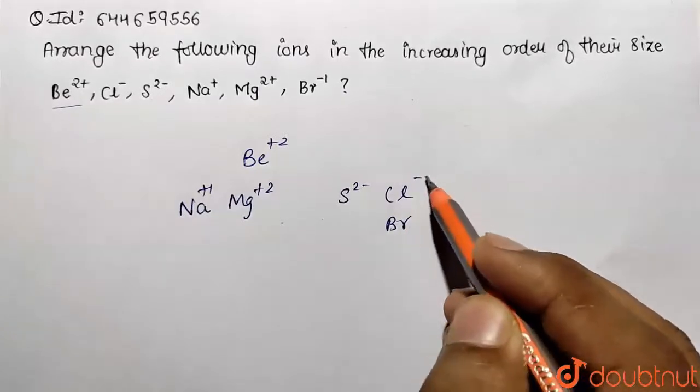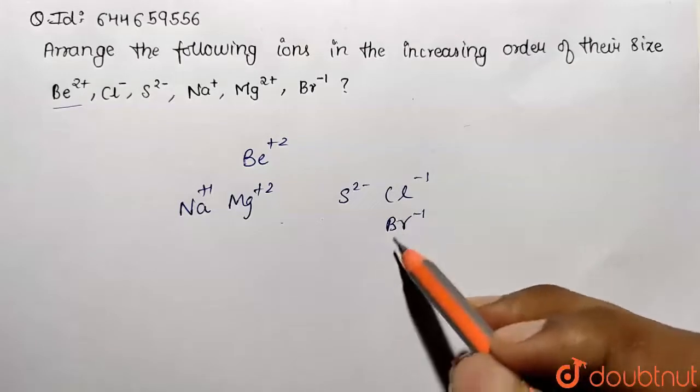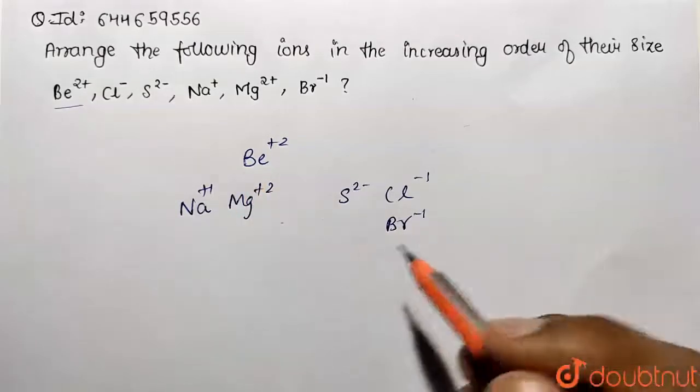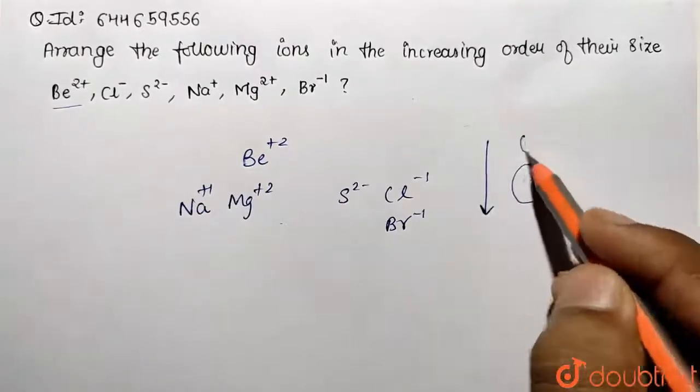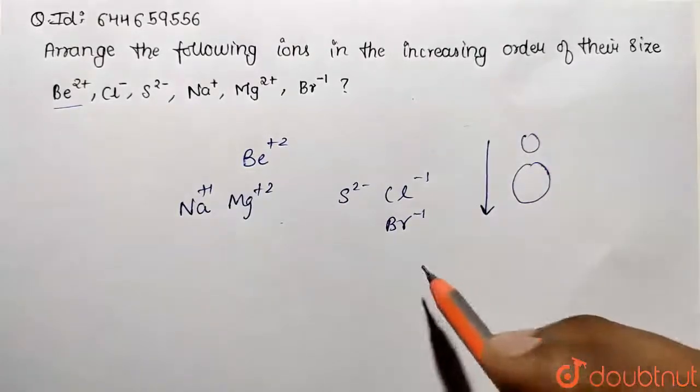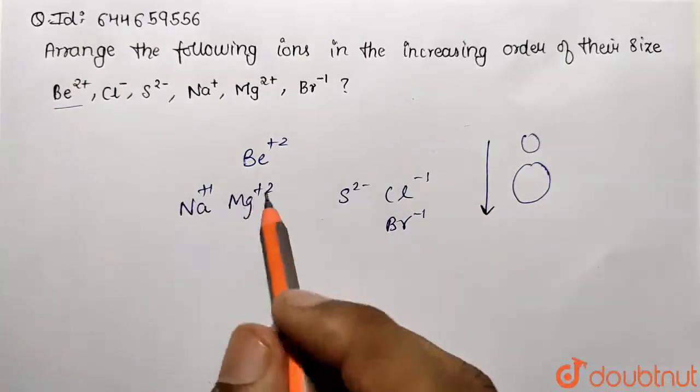Because the period is going to be more and more, the size is going to be correspondingly larger and larger. The general trend says that as we go down the group, correspondingly size increases down the group. So this is the general order.